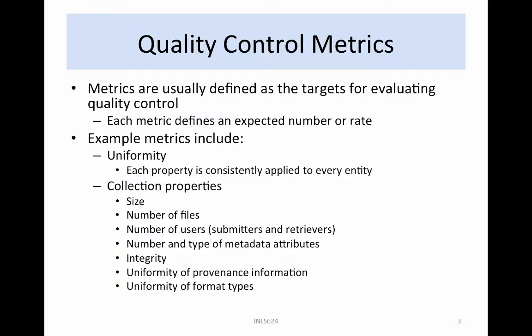Summarization information is also needed. For collections, the total size and number of bytes is known, and the number and type of metadata attributes is known. For users, the number of users, submitters, and retrievers is known. For integrity, the number of replicas and the distribution across storage systems is known.